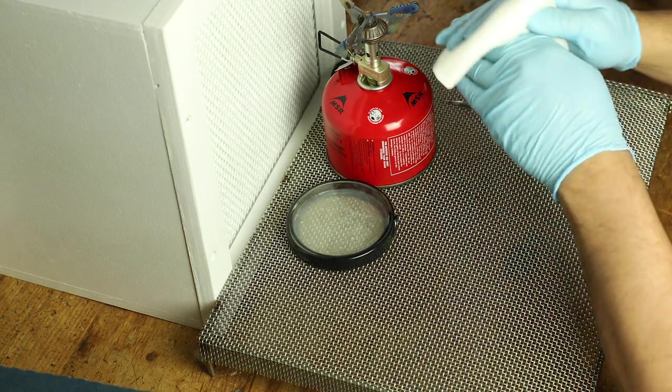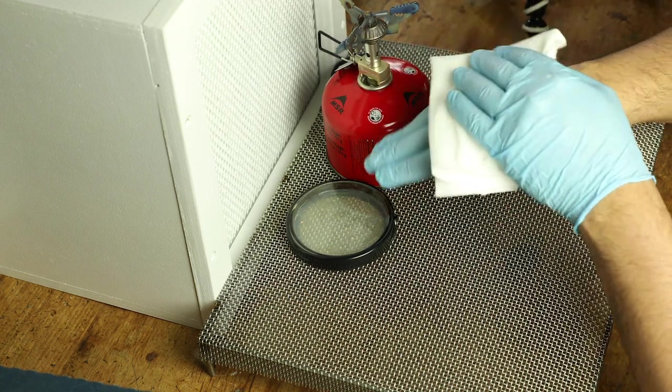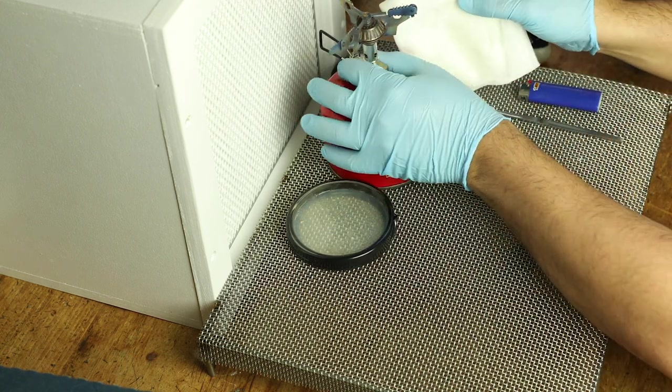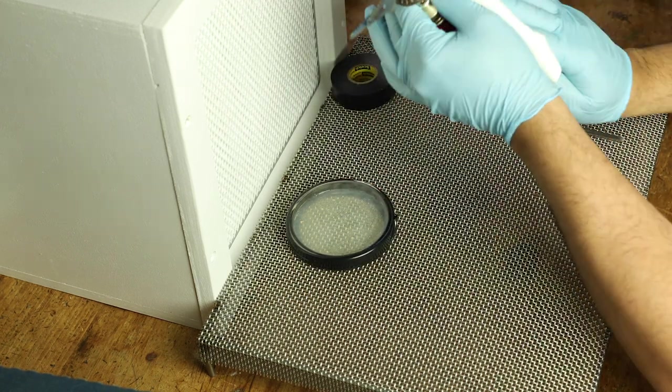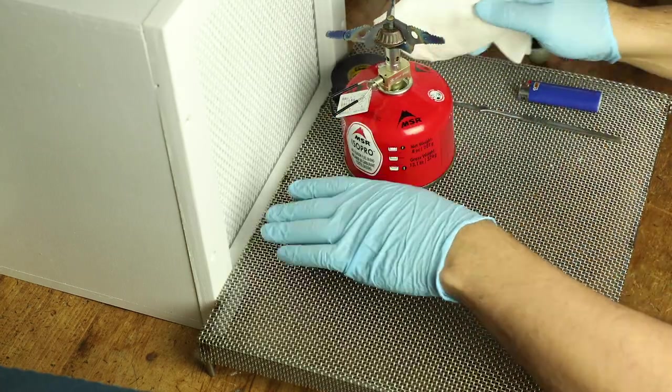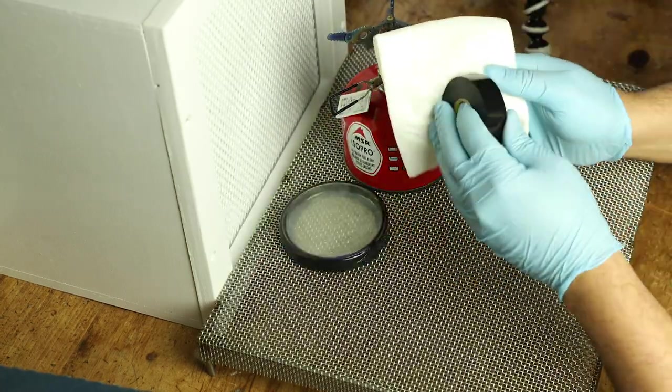The first thing you're going to need is a laminar flow hood to create an aseptic environment. You're going to need some petri dishes with agar ready to go, some electrical tape, and a method by which you can flame sterilize your scalpel.